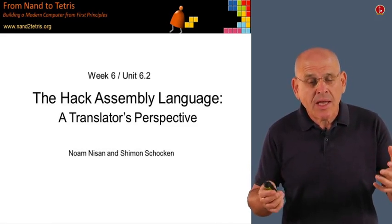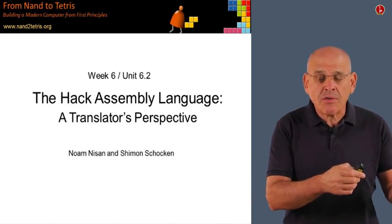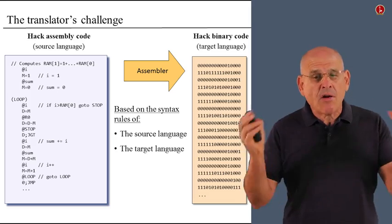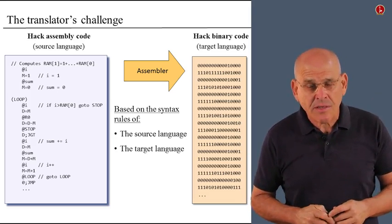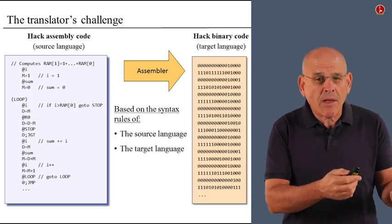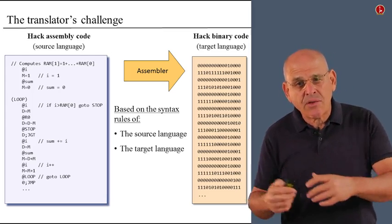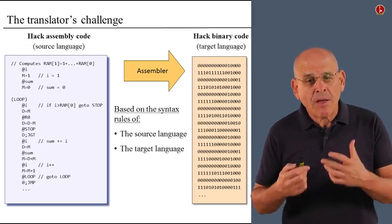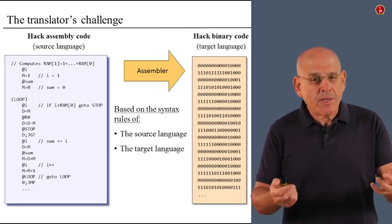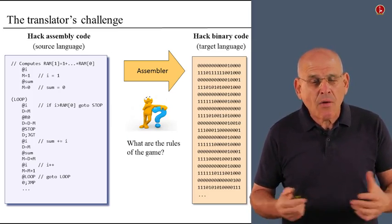An assembler that works and can translate programs from symbolic hack code into binary hack code. Here is the overall picture in a nutshell: we are given a source program written in symbolic hack language, and we have to translate it into an equivalent program written in binary code. So if you were the person supposed to develop such an assembler, how would you go about it?